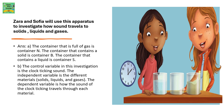Zara and Sophia will use this apparatus to investigate how sound travels through solids, liquids and gases. The container full of gas is container N. The container with a solid is container B. The container with a liquid is container S. The control variable is the clock ticking sound. The independent variable is the different materials — solids, liquids and gases. The dependent variable is how the sound of the clock ticking travels through each of these materials.